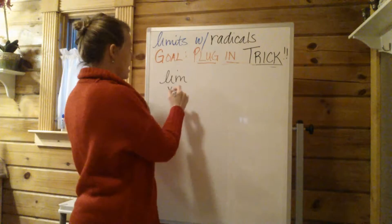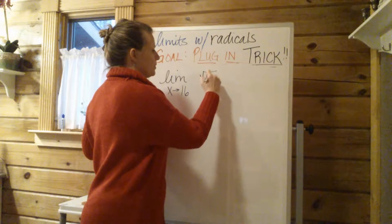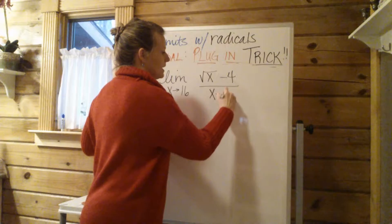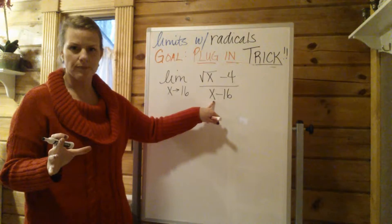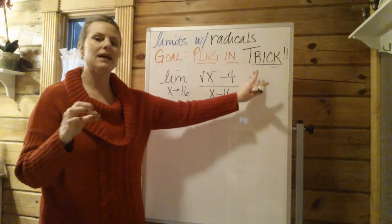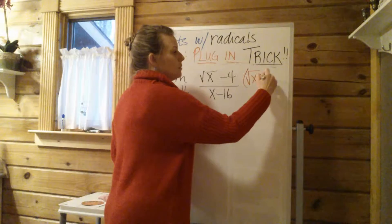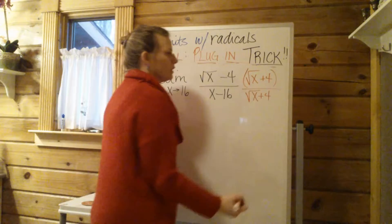If we say the limit as x approaches 16, this time let's say it's going to be the square root of x minus 4 over x minus 16. So again, looks kind of familiar. You see that radical right away? That should be the red flag. I'm going to have to rationalize. I can't plug 16 in right now because I get 0 in the bottom. But what's my trick? My trick with the radical is to multiply by the conjugate on top and bottom. So that's going to be the square root of x plus 4 over the square root of x plus 4.